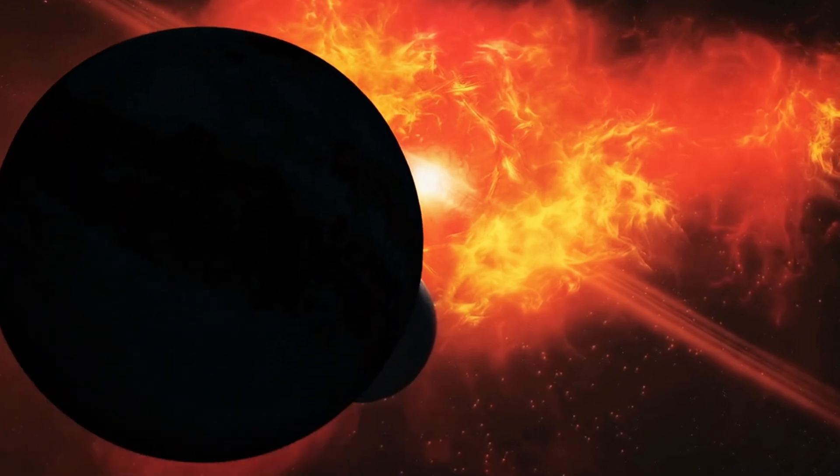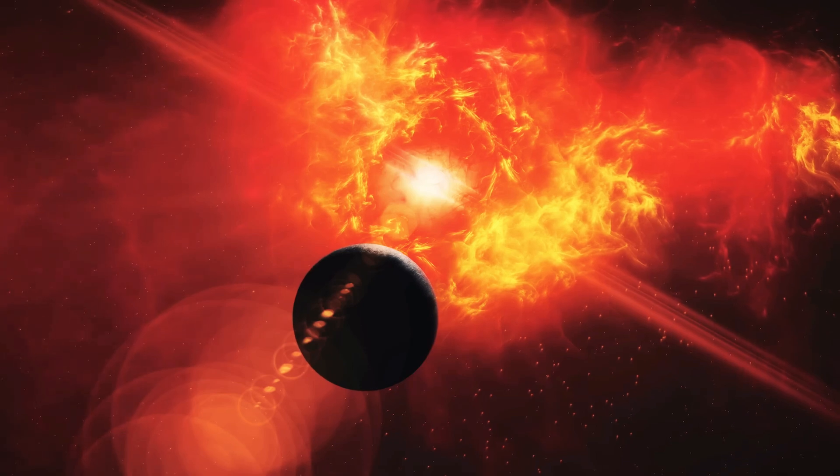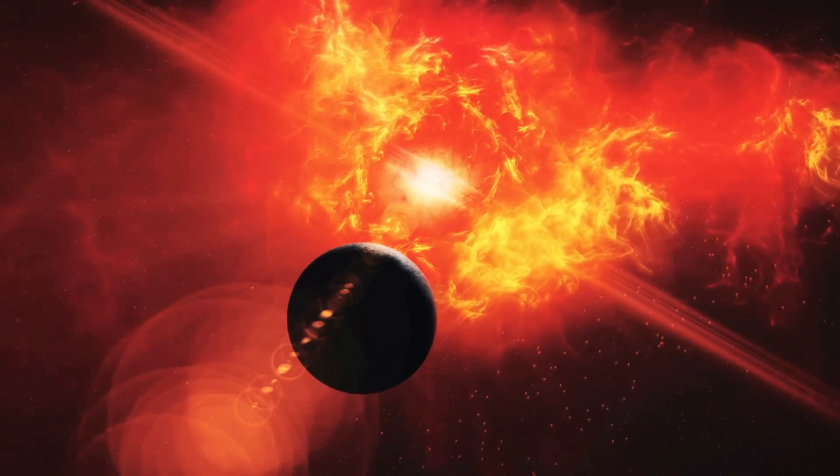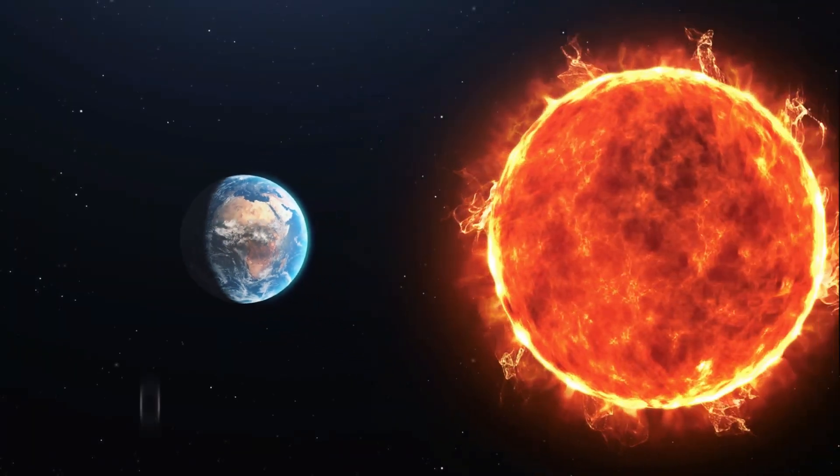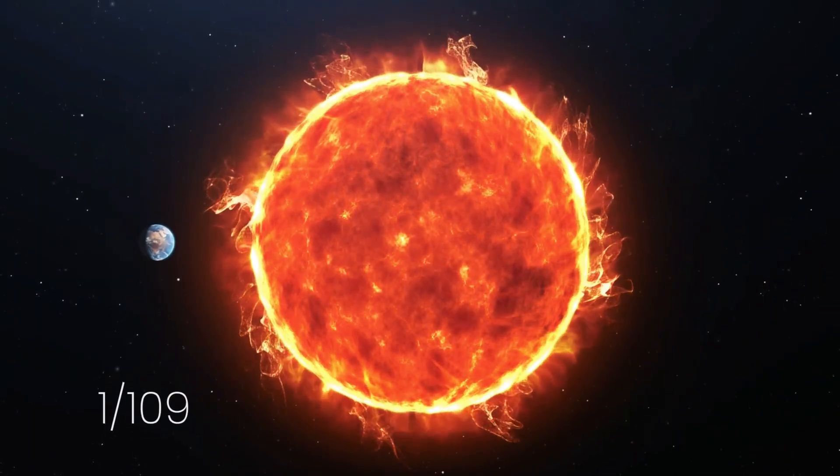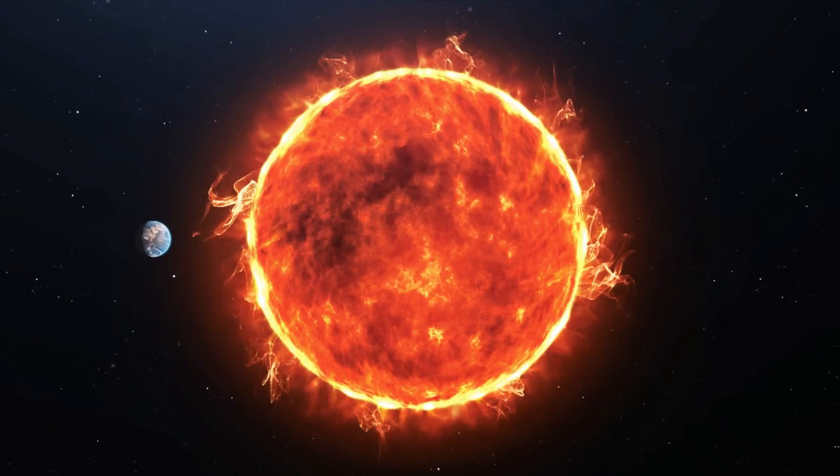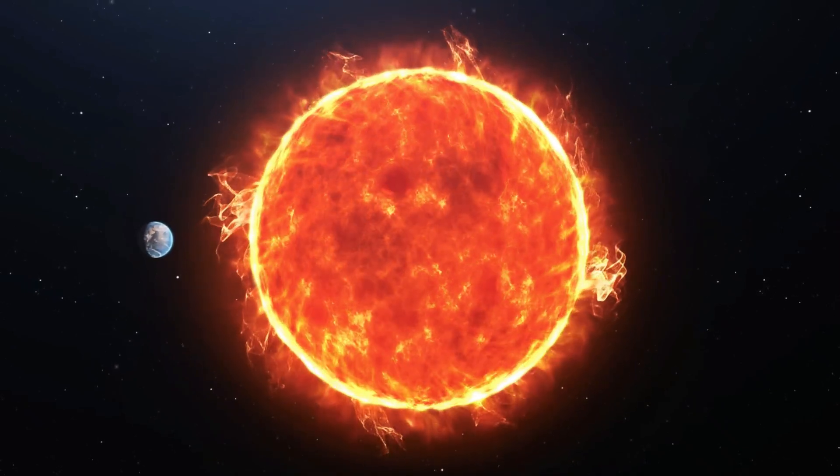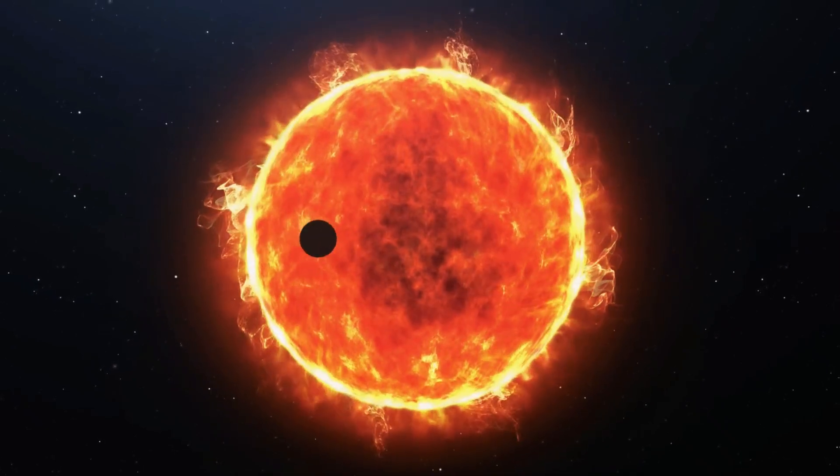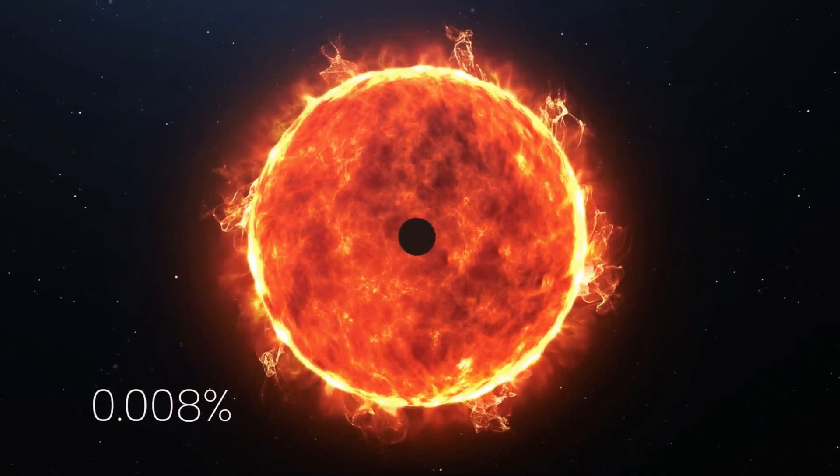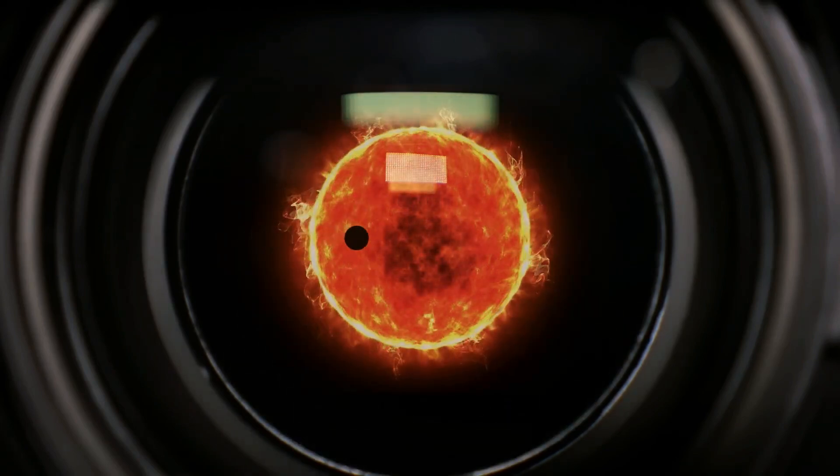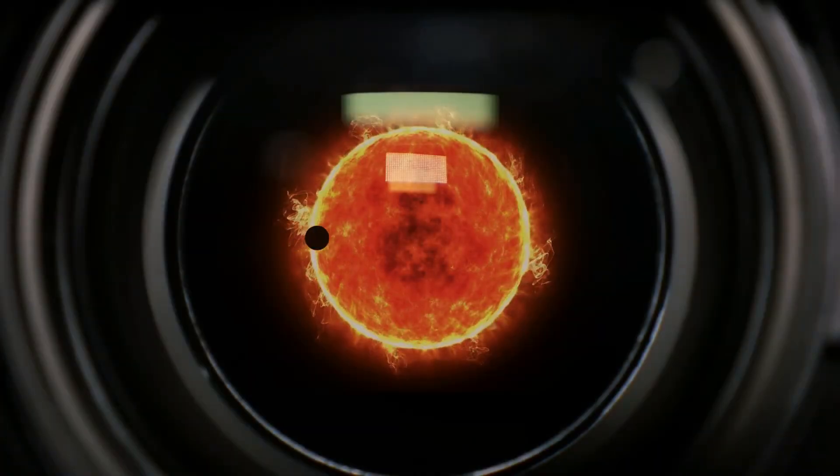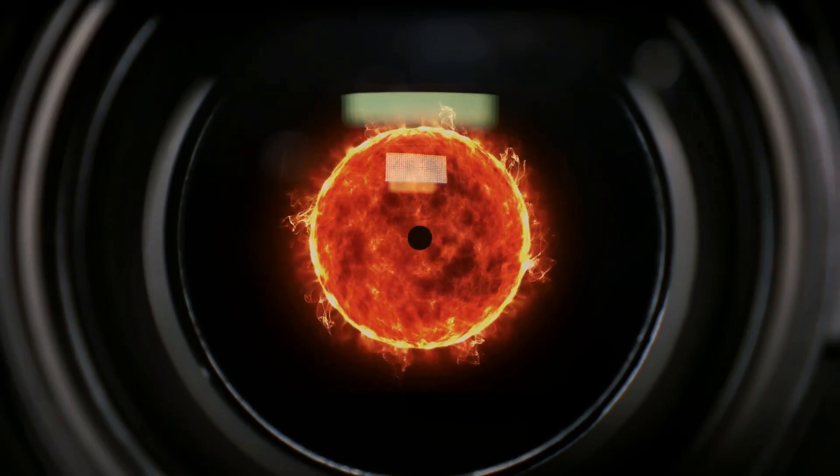However, detecting the transit of an extrasolar planet is very challenging. For example, the diameter of Earth is only 1/109th of that of the Sun, so for an outside observer of the solar system, the passage of Earth would dim the output of the Sun by only 0.008%. Kepler's cameras had to be sensitive enough to detect this minute change in the luminosity. Using the same method way back in 2014, Kepler first found a potentially habitable exoplanet.